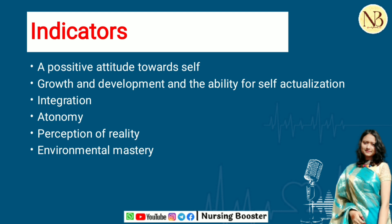The fourth indicator is autonomy, which refers to the individual's ability to perform in an independent, self-directed manner — the individual makes their own choices and accepts responsibility for the outcomes. In other words, autonomy means taking responsibility. The fifth indicator is perception of reality, which includes perception of the environment without distortion, as well as the capacity for empathy and social sensitivity, and respect for the needs of others.